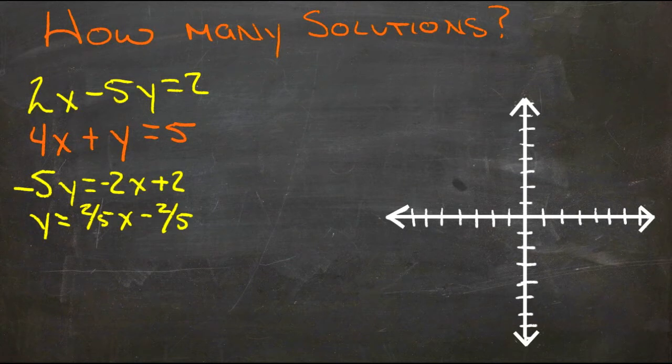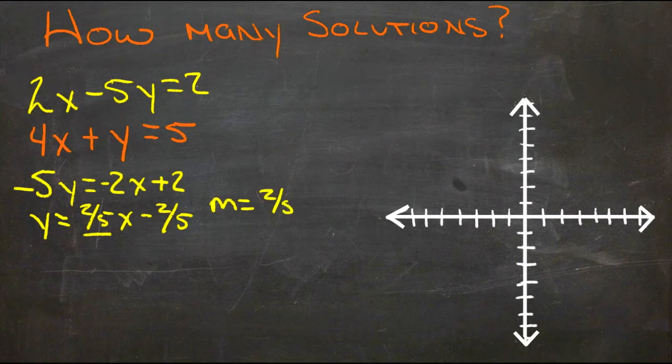So our m here is 2 fifths, and b is negative 2 fifths.